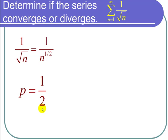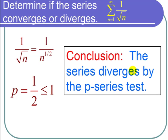In this case, p equals 1/2, which is less than or equal to 1. Therefore, we can conclude that the series diverges by the p-series test.